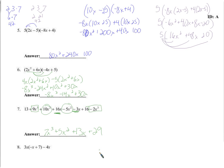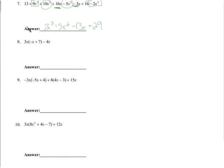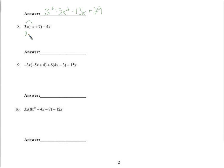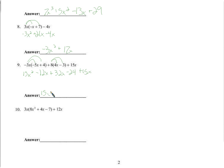Distributing the 3x: 3x times negative x is negative 3x squared, and 3x times positive 7 is 21x, minus 4x — so negative 3x² plus 17x. Distributing the negative 3x: that's positive 15x². Negative 12x. Distributing the 8 into this parenthesis: 32x, negative 24. And we add 15x squared. Combining: negative 12x plus 32x plus 15 — that's 32 minus 12 equals 20, plus 15 gives 35x, minus 24.